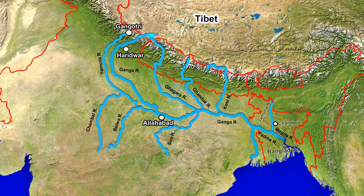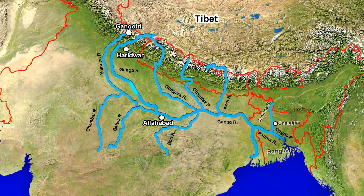The Ganges flows along with its right bank tributaries: Pindar, Mandakini, Dauli Ganga, Bishen Ganga and finally Alaknanda, which joins it at Dev Prayag. It then reaches Haridwar, debouching from the hills and enters the plains.